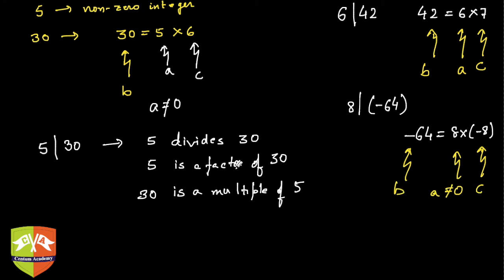Now clearly there are examples when some number doesn't divide a particular number. For example, 5 doesn't divide 31 because there exists no integer such that 31 equals 5 into c.